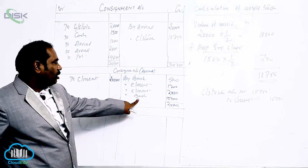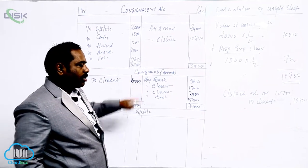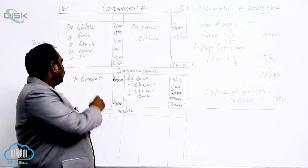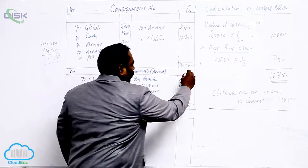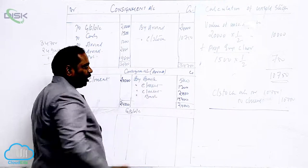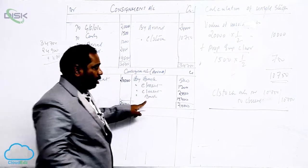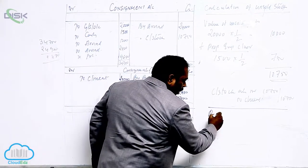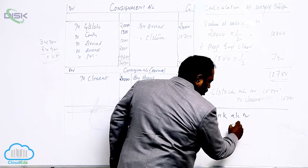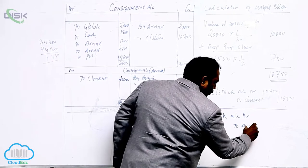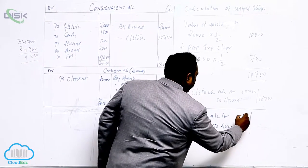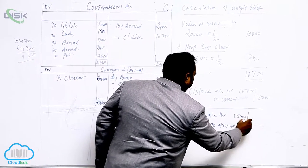What is the entry we have to write? Bank account debit to consignee. Consignee account has been credited, and bank is debit. Arvind account has been credited. So what we should write: bank account debit to Arvind. This is the settlement amount: 15,400.